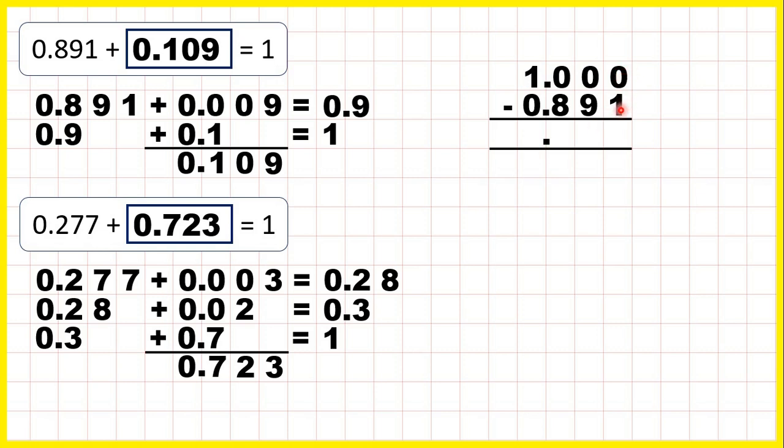We copy down the decimal point into our answer. We can't do 0 minus 1 using the column method, and when we go to the left, we have a 0 and another 0. So, we go all the way over to the 1, exchange it for 10 tenths, then exchange one of those tenths for 10 hundredths, and exchange one of those hundredths for 10 thousandths.